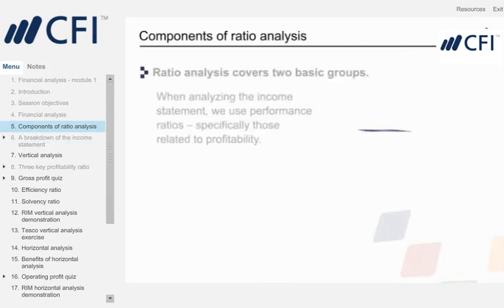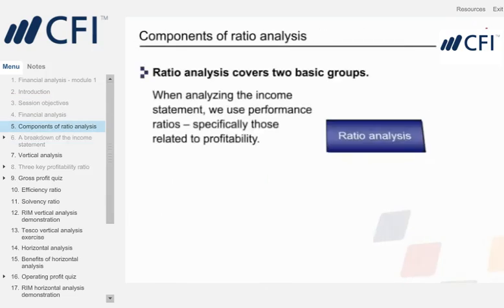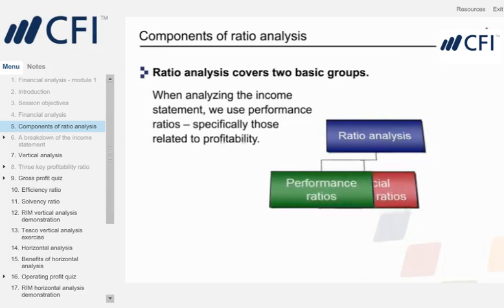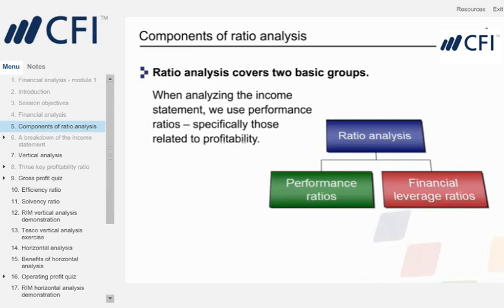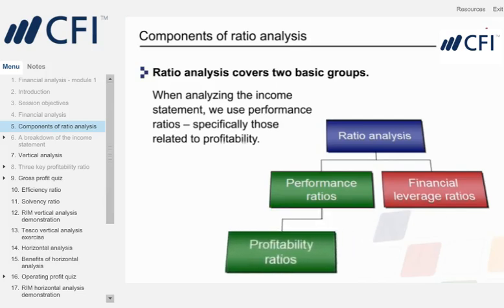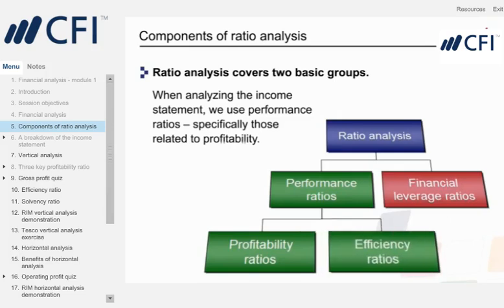When using ratio analysis, there are two basic groups: performance ratios and financial leverage ratios. Performance ratios speak to how a company is doing, how profitable it is, and how efficiently it is being run. Financial leverage ratios speak to the financial condition of the company, how liquid and how solvent it is.